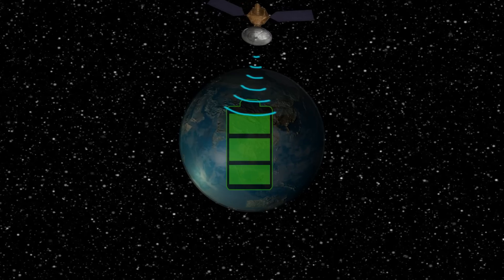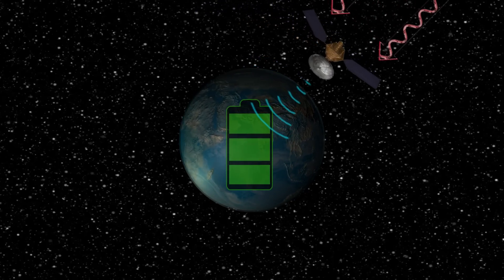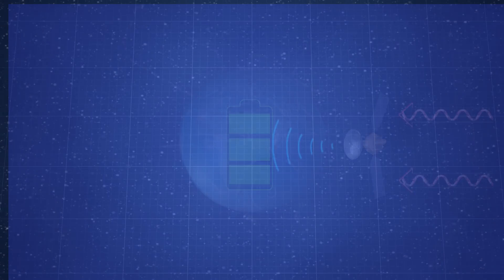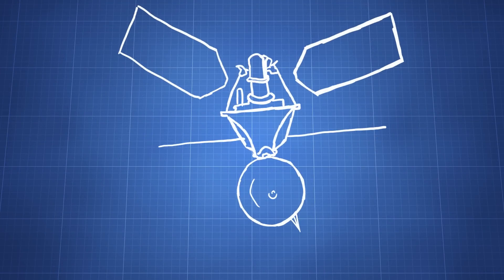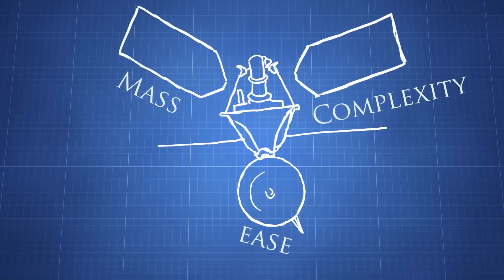Until now, the largest factor working against the development of solar power satellites has been their prohibitive cost. To launch any satellite and make it operational is dependent on many factors, including that satellite's mass, complexity, and ease of setup after deployment.